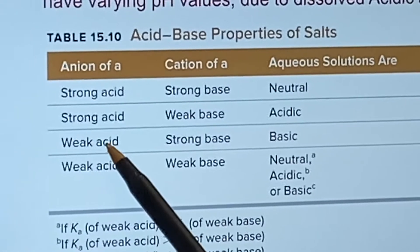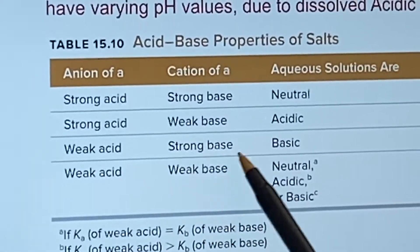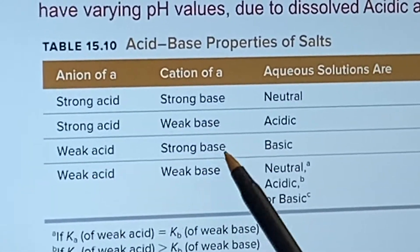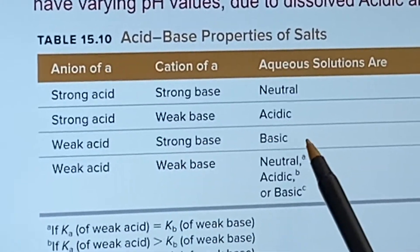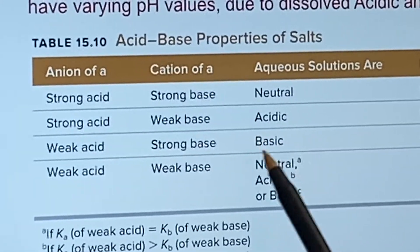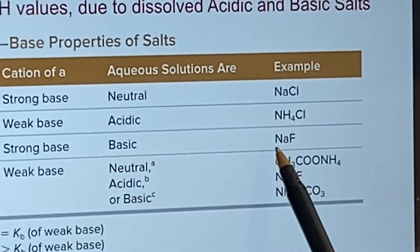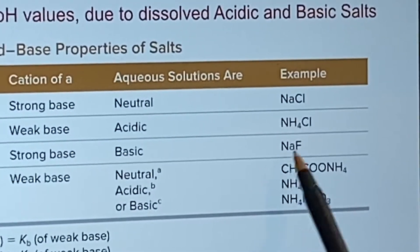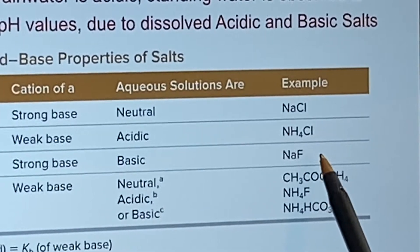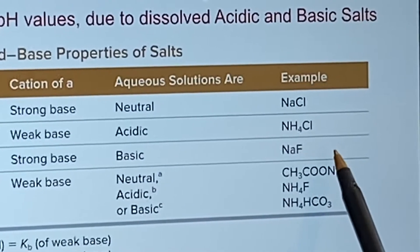What about the other way around? If it comes from a weak acid and a strong base, the base was the strong one. It's going to make sure that the solution is basic. What's an example? Sodium fluoride. The sodium came from sodium hydroxide. Strong. The fluoride came from hydrofluoric acid, which is a weak acid.